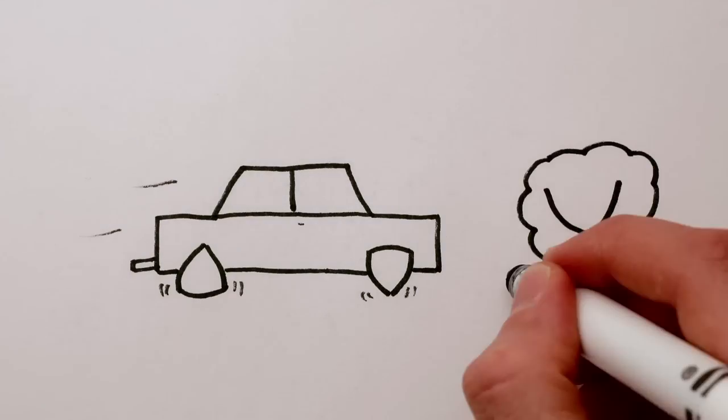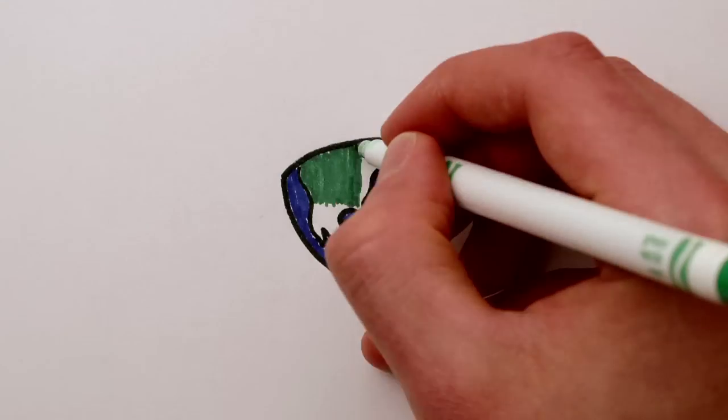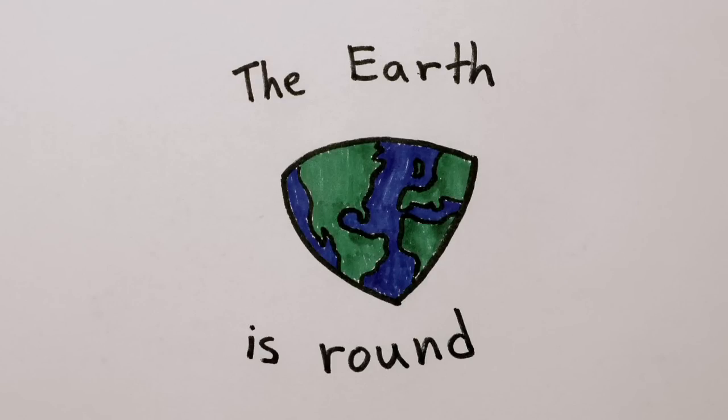In fact, the points on a Reuleaux triangle are just that, pointy. Doesn't that go against the idea of roundness? Well, geology has the answer.